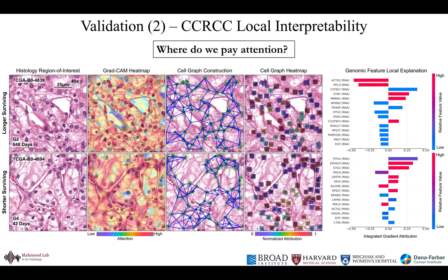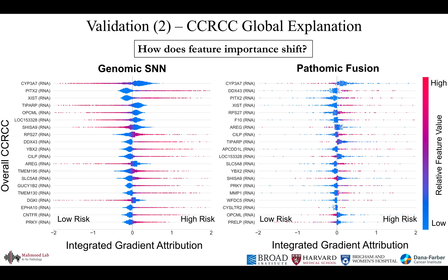We perform similar interpretability analysis on CCRCC for two individual patients with shorter and longer survival outcomes. In the shorter survival patient, we observe Pathomic Fusion attending to large cells with prominent nucleoli and eosinophilic clear cytoplasm in the cell graph, and the chicken wire vascular pattern in the histology image that is characteristic of higher grade CCRCC. When we look at global explanation of genomic features, Pathomic Fusion discovers decreased CYP3A7 expression and increased PITX2 expression to correlate with risk, suggesting potential to refine gene signatures and uncover new prognostic biomarkers for therapeutic targeting.